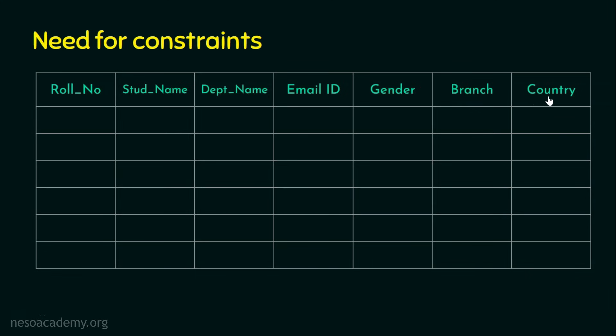Coming to branch and country, we can set appropriate constraints. A university or college may have multiple branches, so we can set a constraint according to the number of branches. For the last column, country, we can set the default value — say India. While inserting a record, if we don't give any value, by default India will be placed in that column. If a student is from a different country, then that country name can be included. Default is one of the constraints. So constraints ensure integrity, accuracy, and reliability.